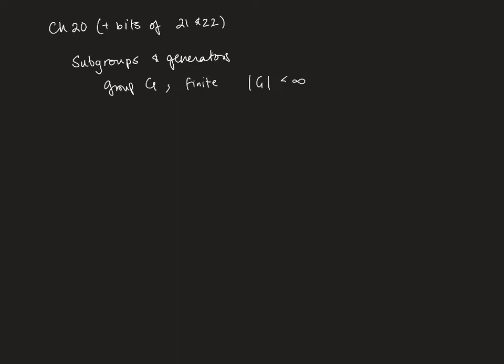So the way I would write that is absolute value bars of G is less than infinity. So in this context those absolute value bars mean the size of the group or the cardinality. So we're talking about number of elements.